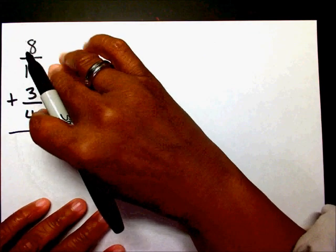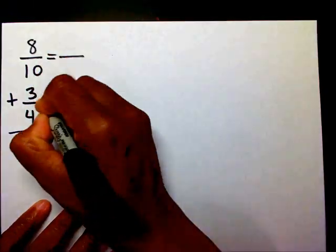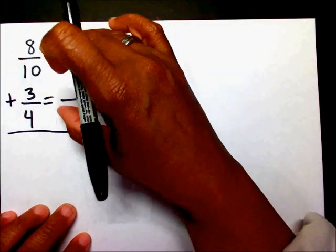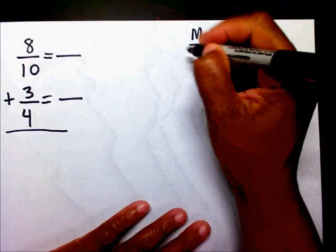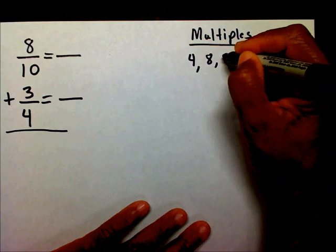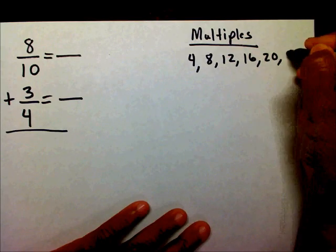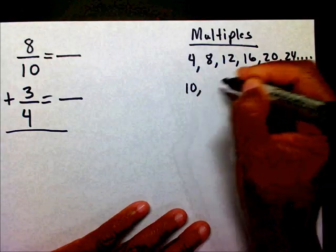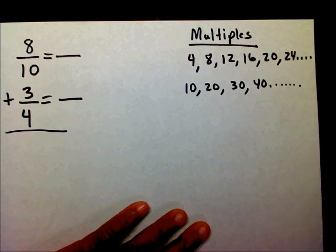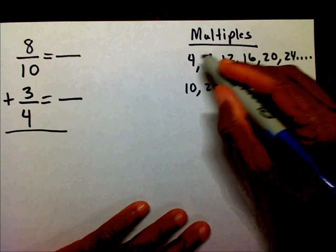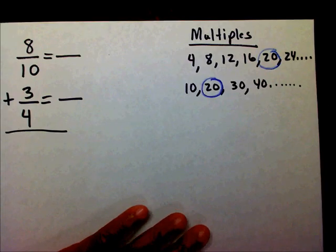I have two different denominators: a ten and a four. I need to get a new denominator because I can't add these two fractions until the denominators are the same. I'm going to list my multiples. My multiples of four are four, eight, twelve, sixteen, twenty, twenty-four, and so on. My multiples of ten are ten, twenty, thirty, forty, and so on. The smallest number they share is twenty, so my new denominator is going to be twenty.